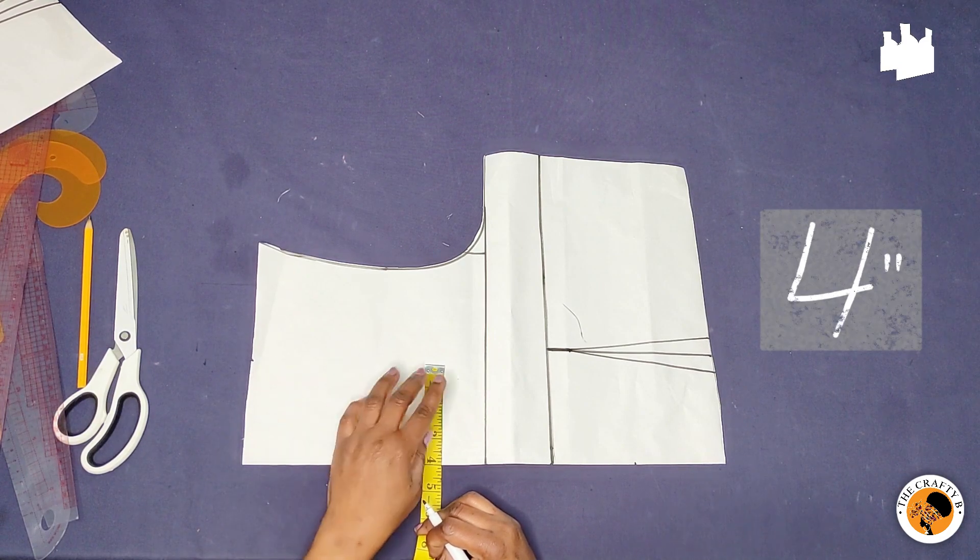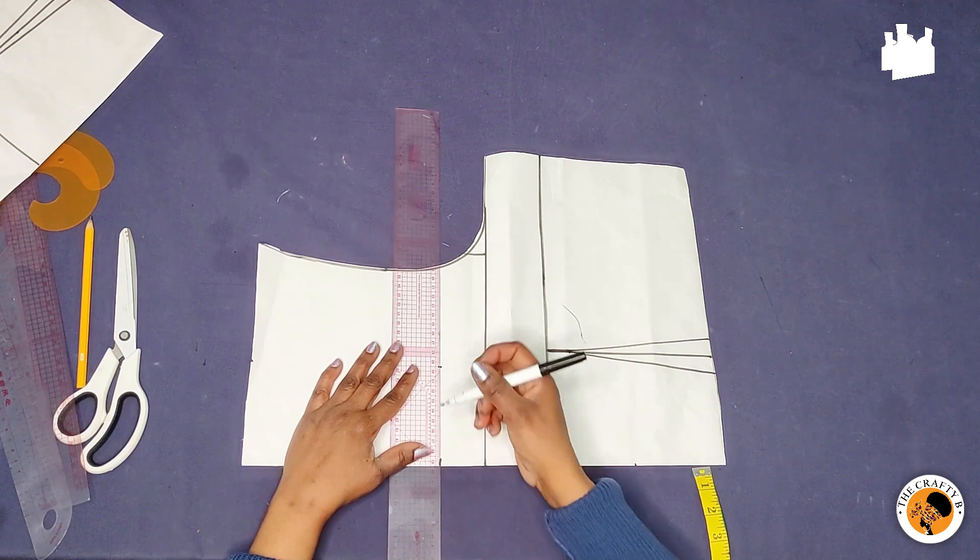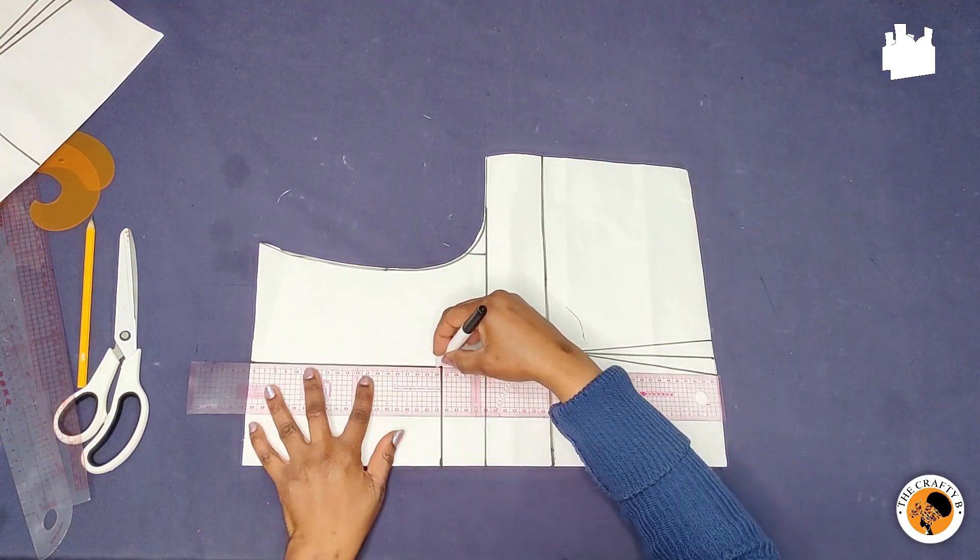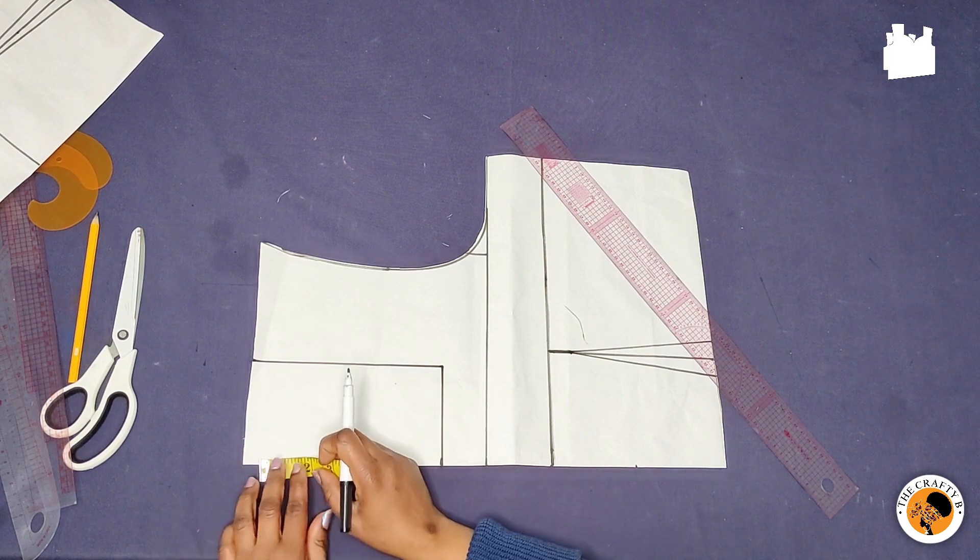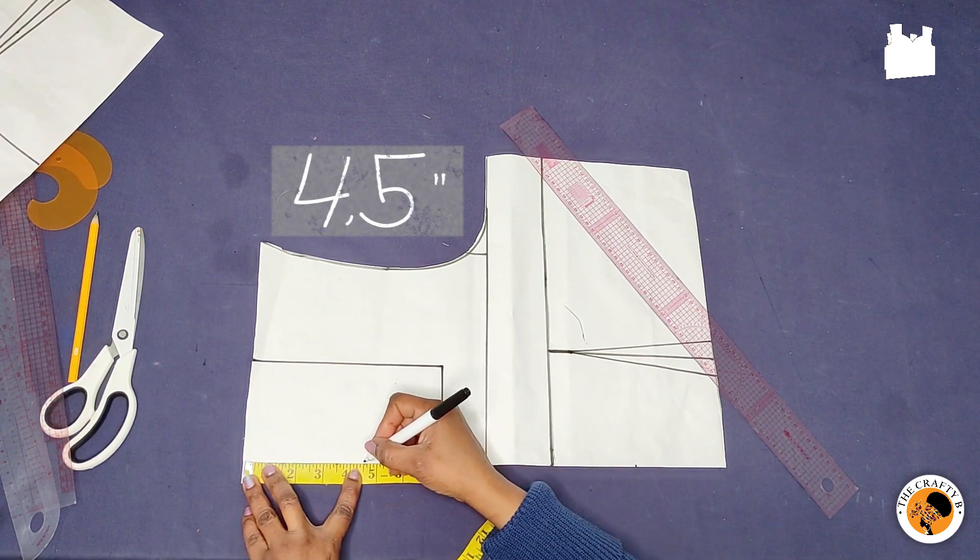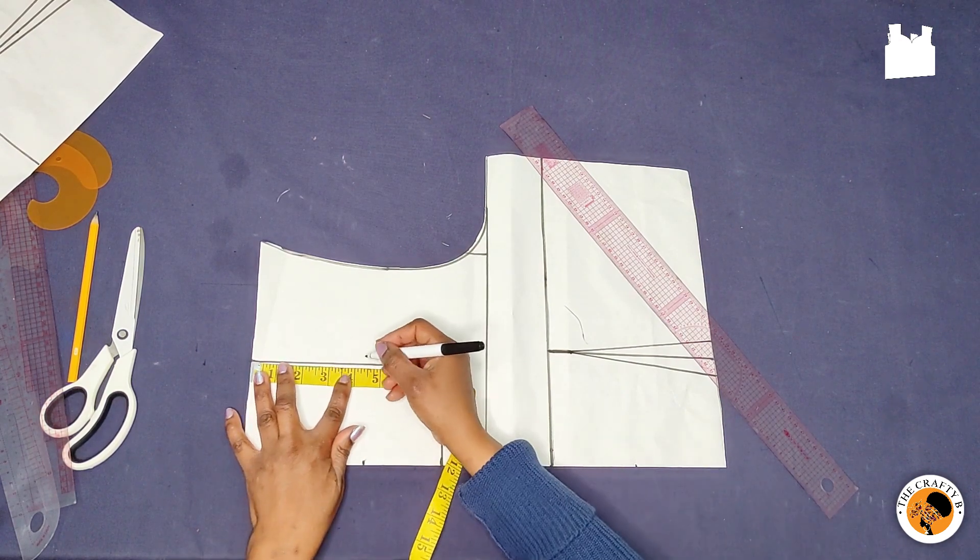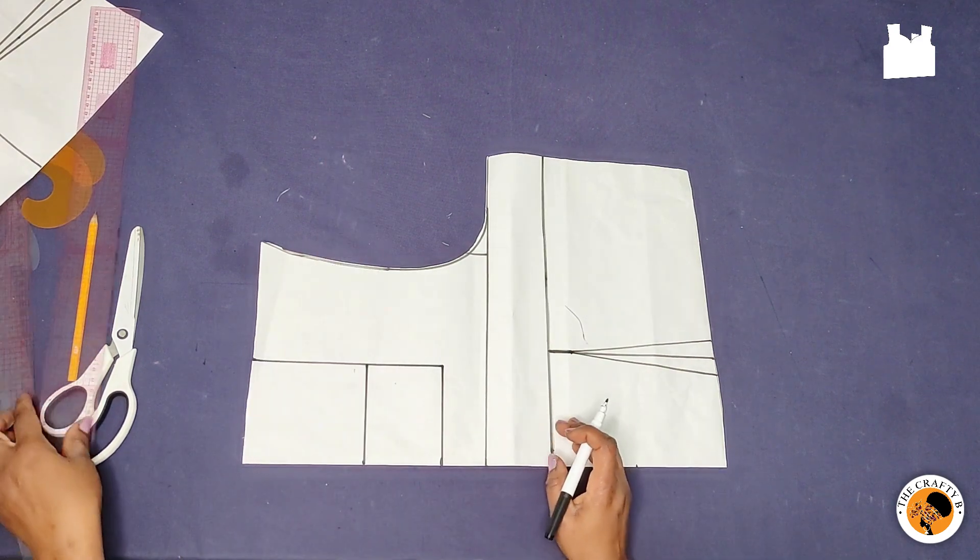So the next thing is to come to the center front and then come down four and a half inches, and I mark the same four and a half inches here, and then you draw a straight line like so. Now I will get my curve ruler to create the sweetheart neckline.